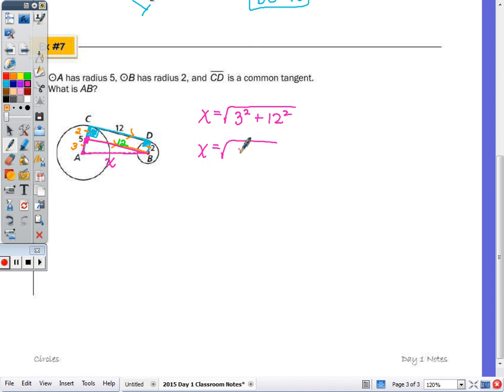So X = √(9 + 144) = √153. I need to simplify this radical. The largest perfect square factor of 153 is 9, since 153 = 9 × 17. Taking the square root of 9 gives 3√17. Therefore, length AB equals 3√17 units.